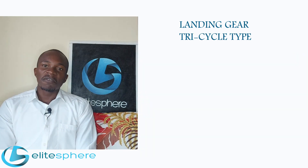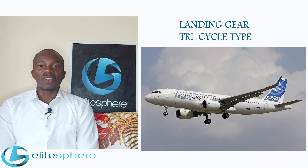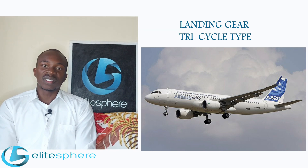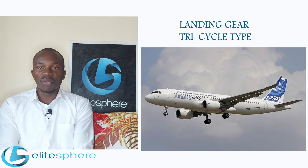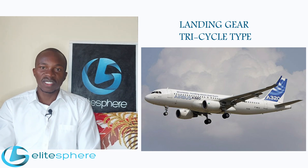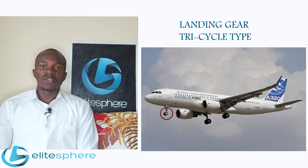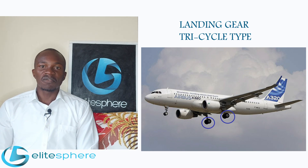Finally, we have the tricycle type, which is the most common type of landing gear arrangement found on most aircraft. This configuration has a nose gear that supports the weight of the aircraft in front, and the main landing gears are positioned after the center of gravity to support most of the weight of the aircraft. In this picture, we can see an example of a tricycle aircraft with the nose wheel in front and two main gears near the center of gravity.